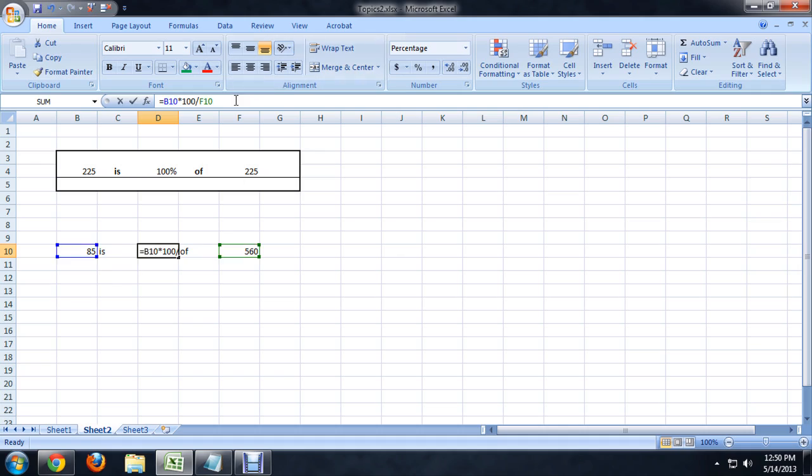So with that cell selected, we'll go back to the formula and say divide everything by 100, and push enter. And so now it kind of looks correct.